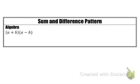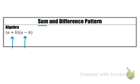This next section is called the sum and difference pattern. If you have two binomials where the first term in each is the same, but the second terms are opposites of each other — one a sum and one a difference — this is called the sum and difference pattern. When you multiply out these binomials, the result always takes the form a squared minus b squared.